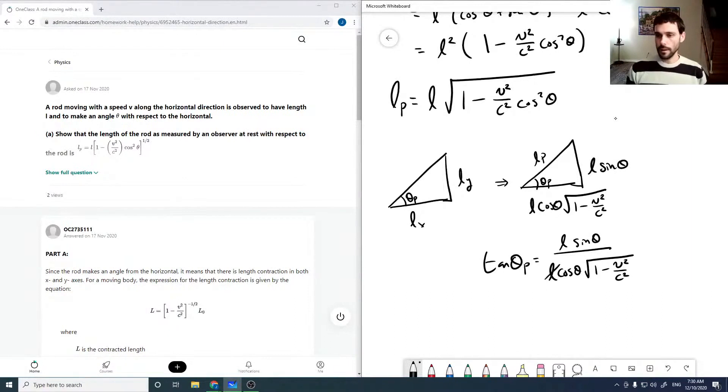The L's cancel, sine theta over cos theta is just tan theta. So then tan theta P is tan theta over root 1 minus V squared over C squared.